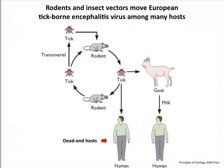Here's another illustration of stable and dead-end interactions with a different virus-host set. Here ticks transmit the virus among rodents — that's the stable cycle occurring in nature. Occasionally ticks can transmit the virus to other ticks transovarially, and ticks can bite other hosts. Humans are dead-end hosts typically — they may or may not develop disease but don't spread it to one another. Occasionally ticks may bite goats and spread the infection to them, and humans can acquire it through goat milk; tick-borne encephalitis virus can be transmitted to humans by goat milk.